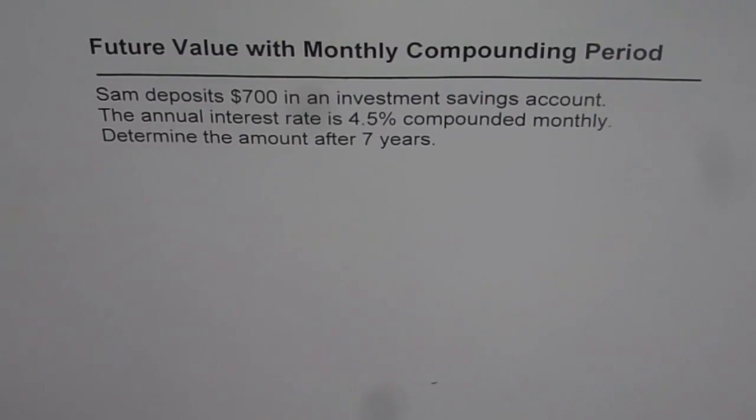Future value with monthly compounding period. Sam deposits $700 in an investment savings account. The annual interest rate is 4.5% compounded monthly.